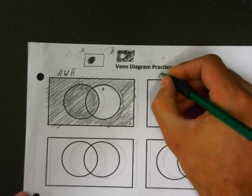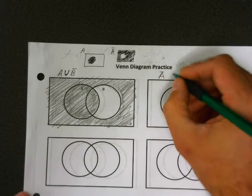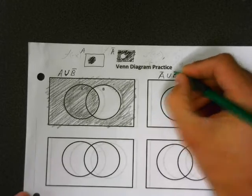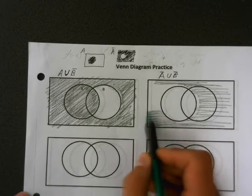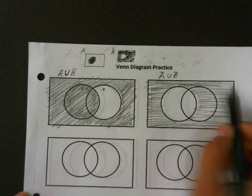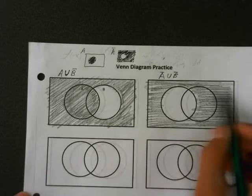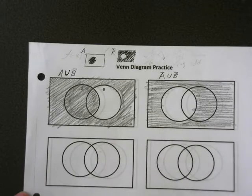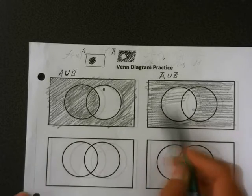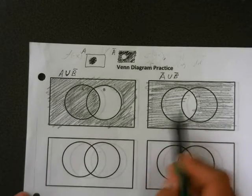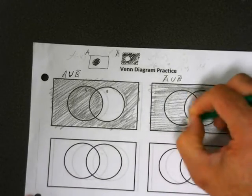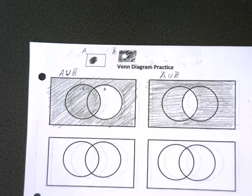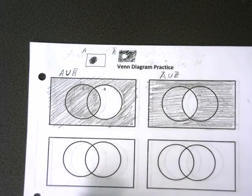Let's try the union again with something harder: not A in union with not B. Remember what not A means? It means everything outside of A, so shade everything outside of A. Then shade everything outside of B. Most of it's already shaded, so the only thing that's not been shaded is the overlap region inside both. Unions are easy — you just shade both of them; you never put your eraser down. You just shade.